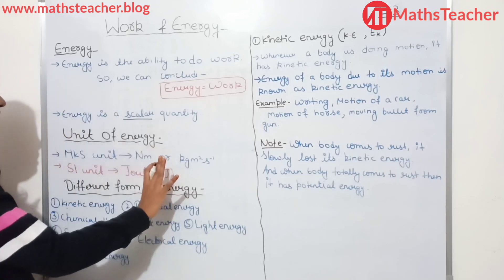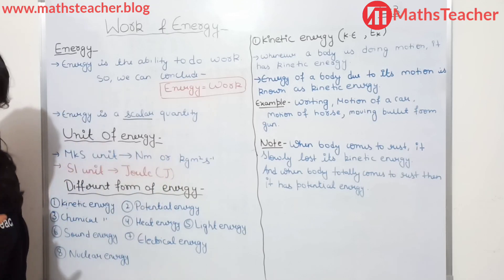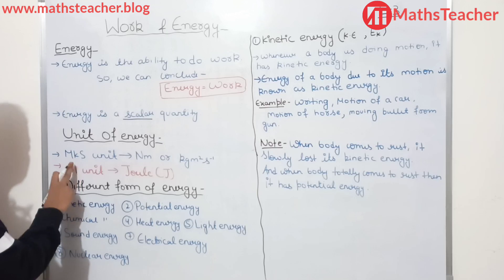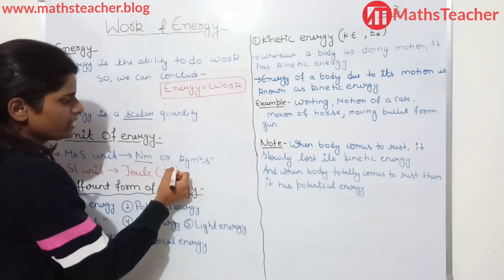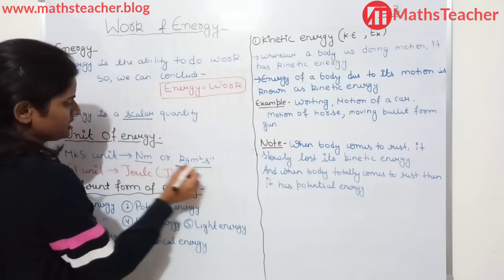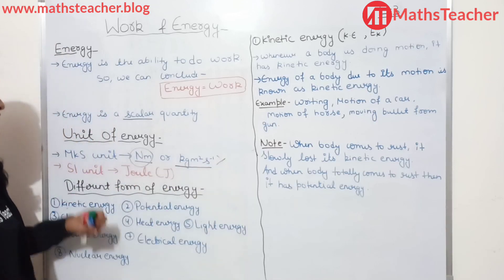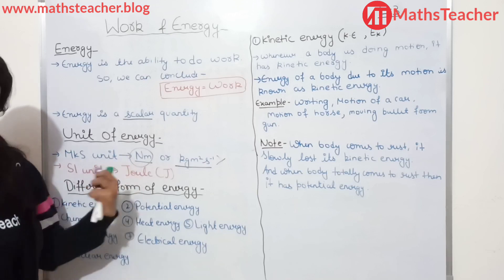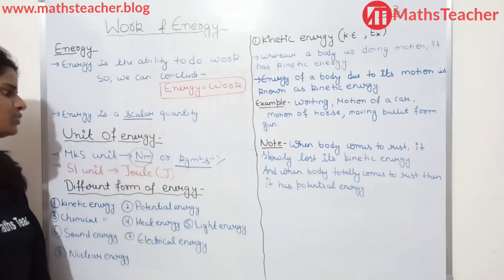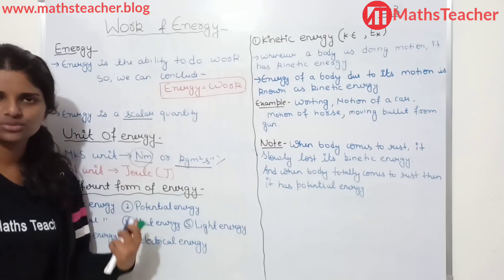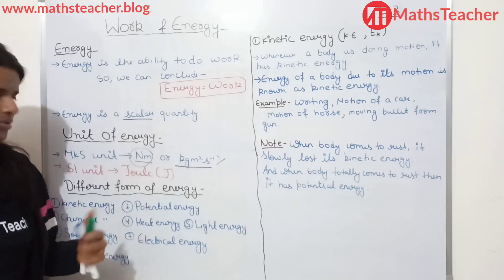Now let's talk about the unit of energy. In physics, we have two types of units: MKS and SI. In MKS, the unit of energy is either Newton-meter or kg·m²/s². The SI unit is joule. Just as the unit of work was joule, the unit of energy is also joule.